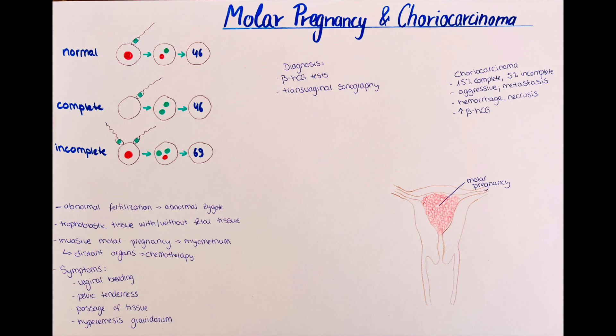The diagnosis of choice is a laboratory test measuring beta-HCG levels. The HCG levels are usually markedly increased, much higher than expected for the respective gestational age. This is because HCG is produced by the placenta, and in a molar pregnancy, the placenta eventually occupies the entire uterine cavity. HCG levels are expected to be higher in a complete mole compared to an incomplete mole.